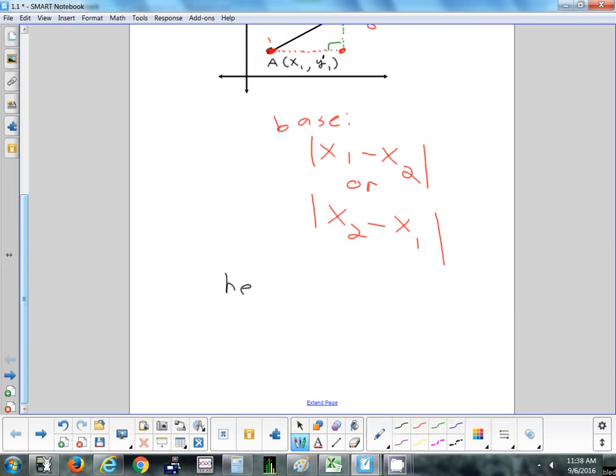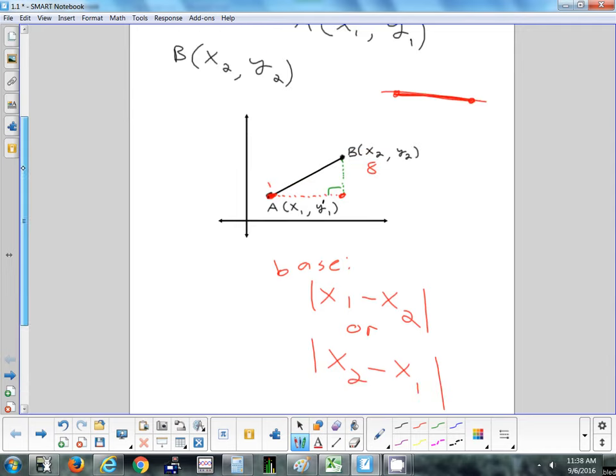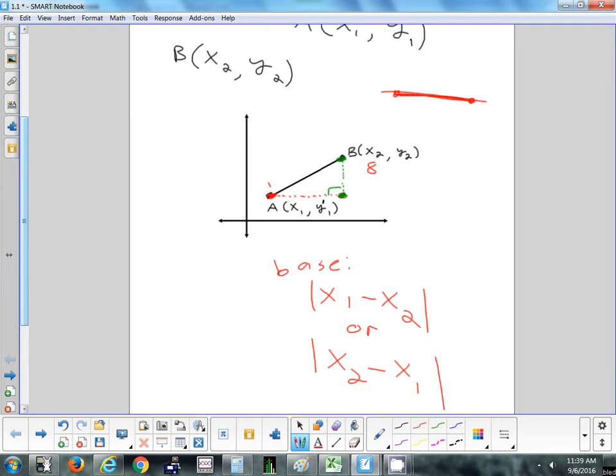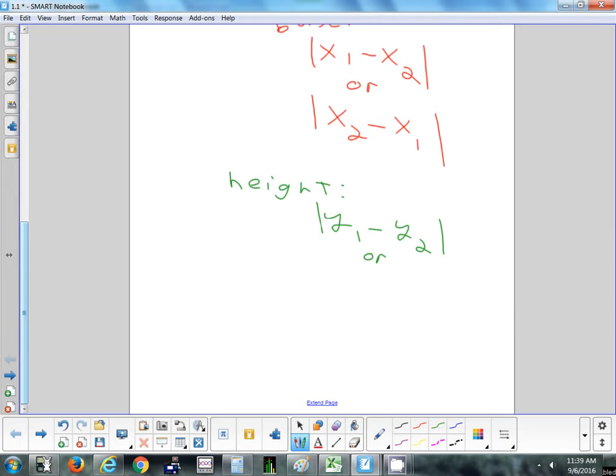Now let's do the height in green. Anybody have a guess what the formula for the height is going to be? We're not focusing on the x's now because we're looking at vertical. We want the distance from that y value to that y value. We're going to focus on y₁ and y₂, and subtract them just like we did before: |y₂ - y₁|, or |y₁ - y₂| - it doesn't matter.